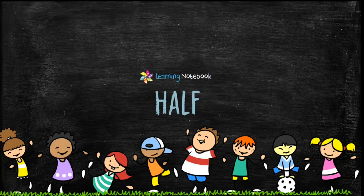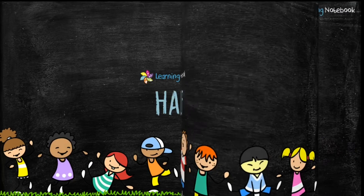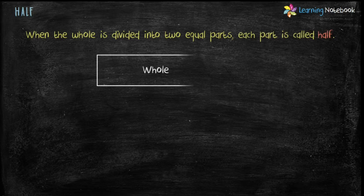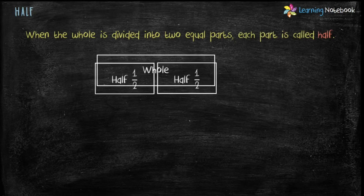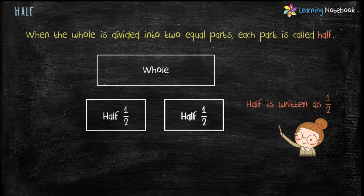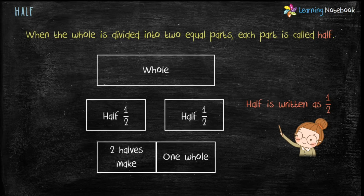Now let us understand what is half. When the whole is divided into two equal parts, each part is called half, and half is written as 1 by 2. Students, two halves make one whole.